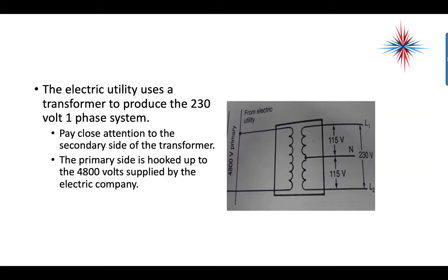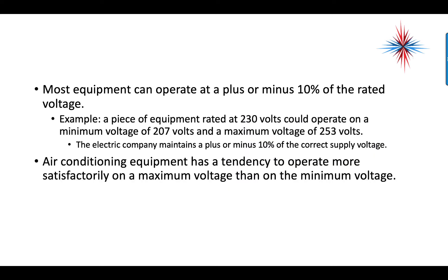The electric utility uses a transformer to produce the 230-volt single-phase system. Pay close attention to the secondary side of that transformer. The primary side is hooked up to the 4,800-volt supply from the electric company. On the pole, there's a transformer with a center tap — that is the neutral — and L1 and L2 come out on each side as the power wires. Most equipment can operate at plus or minus 10% of the rated voltage. For example, equipment rated at 230 volts can operate on a minimum of 207 volts and a maximum of 253 volts.